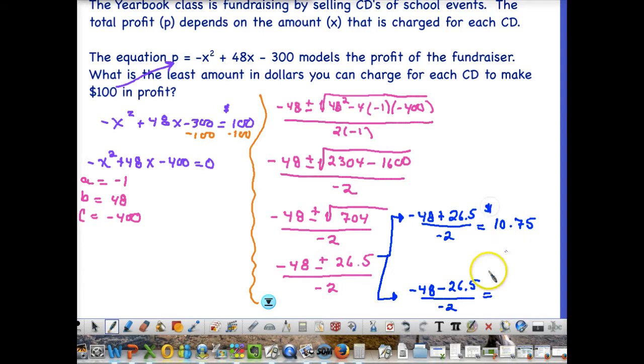That's one option. Our second option, negative 48 minus 26.5, gives us negative 74.5, and you divide that by negative 2, and we end up with $37.25.